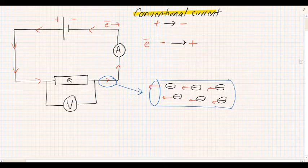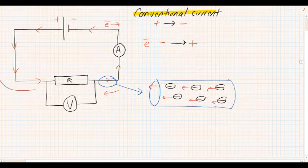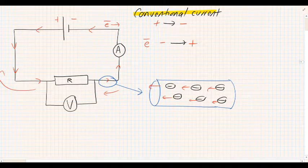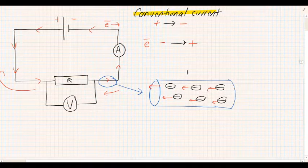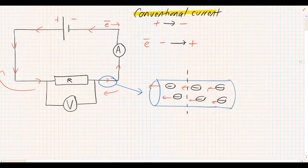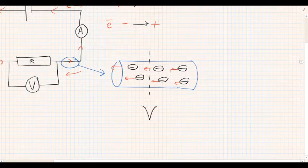They're all heading off in this direction down the wire as they move to the positive terminal of the battery. Now I want you to imagine that you are looking in at this wire, so here's your big eyeball right here and you're looking at that wire at that point of the dotted line.